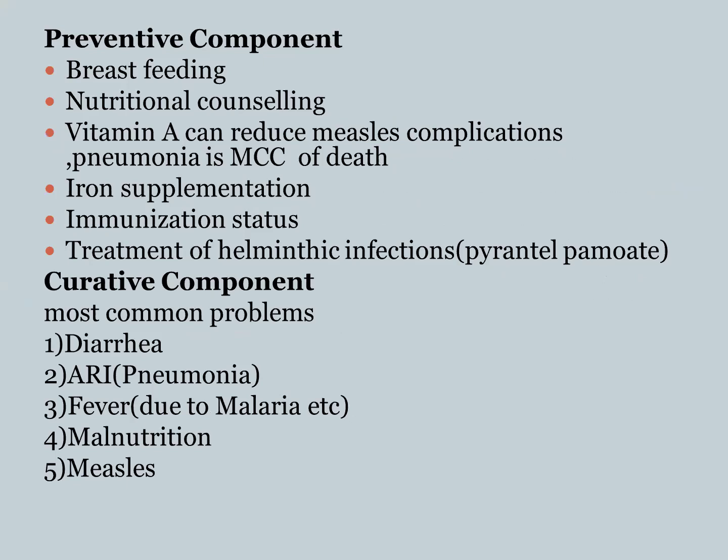The preventive components include treating and using vitamin A to reduce measles complications. Pneumonia is the most common cause of death. It also includes zinc supplementation, immunization status to ensure the child is getting proper vaccinations on time, and treatment of common intestinal infections by providing albendazole. The curative component covers common diseases including diarrhea, acute respiratory infections, pneumonia, fever, malnutrition, and measles.